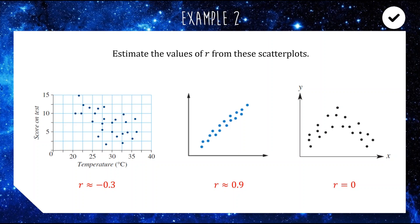So the whole thing averages out to zero. If you have a non-linear scatter plot where you've got half increasing and half decreasing, the overall average correlation is going to be close to zero — so typically we'll only ask this for linear examples.